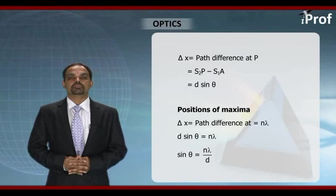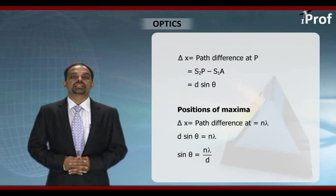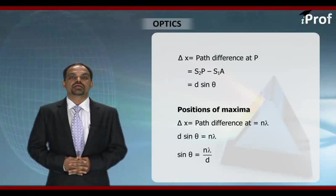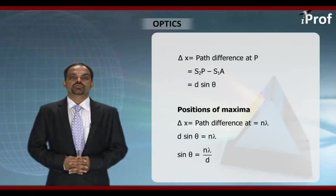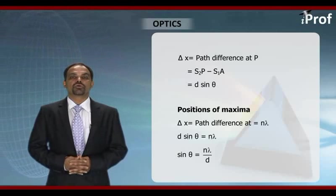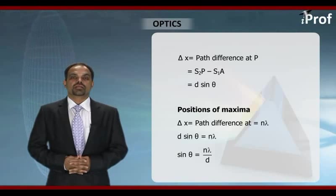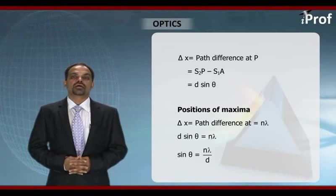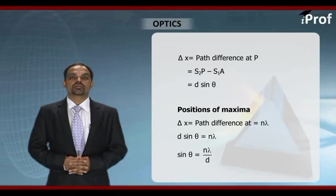then the path difference will be approximately S2M. And this is the extra distance travelled by waves from slit S2. S1 and S2 here are acting as coherent sources. If small d is the separation between S1 and S2, we can easily write from simple geometrical consideration that this path difference will be d sin theta, where theta is the angular position of point P.